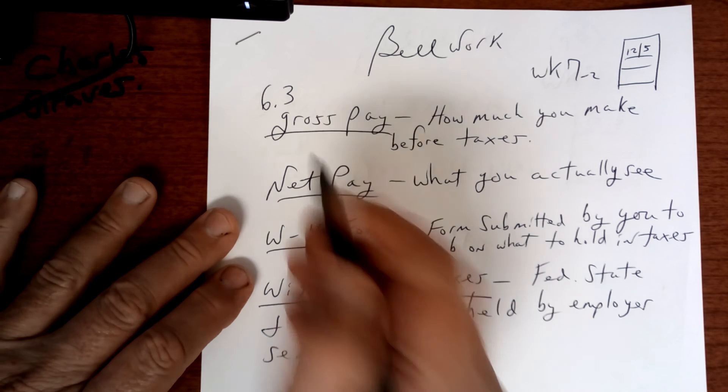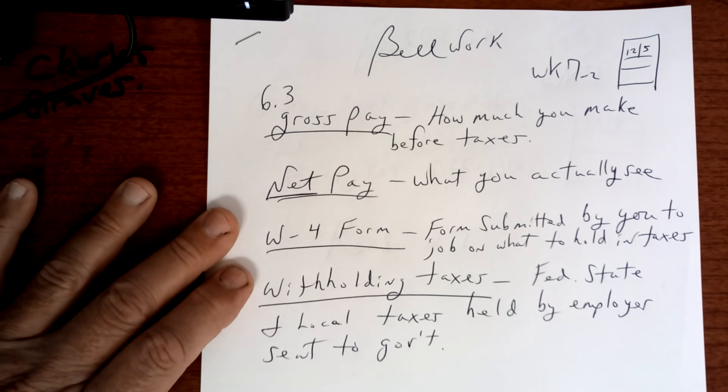Net pay is what you actually see and take home. Net pay is after they take all the taxes out. Your federal tax, your social security, etc.